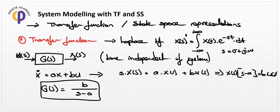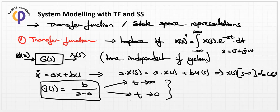Using G(s), we can predict the final value of the system or obtain the time response characteristics independent of time. By checking the roots of this system, we can determine whether the system is stable or whether the system can be controlled. These are the first approaches to creating a system dynamics model.